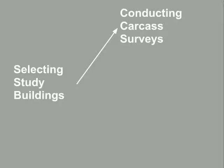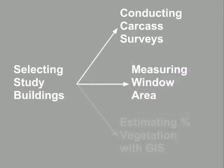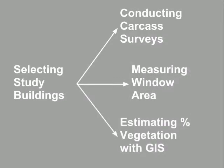You can't conduct carcass surveys, and you can't measure the factors associated with study buildings or any of the factors within the study area. So you can't measure window area, for instance, and you can't estimate percent vegetation using a geographic information system. This video lists the different protocols for selecting study buildings, and within each protocol we have sample video clips and pictures that help illustrate the messages we're trying to send.